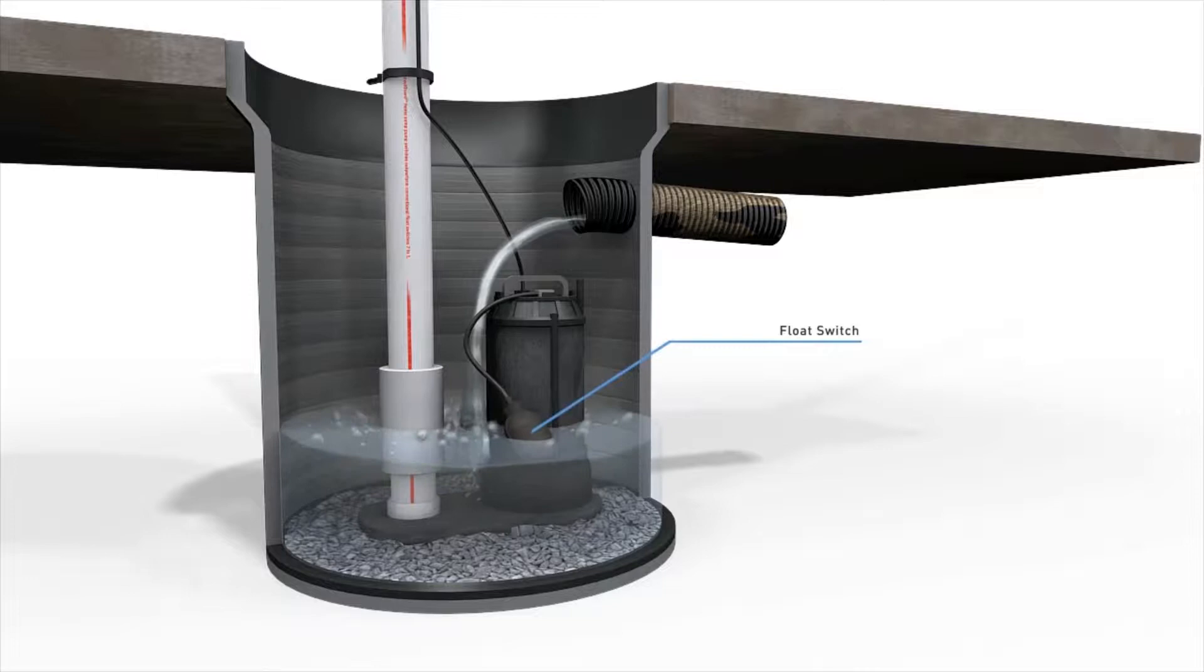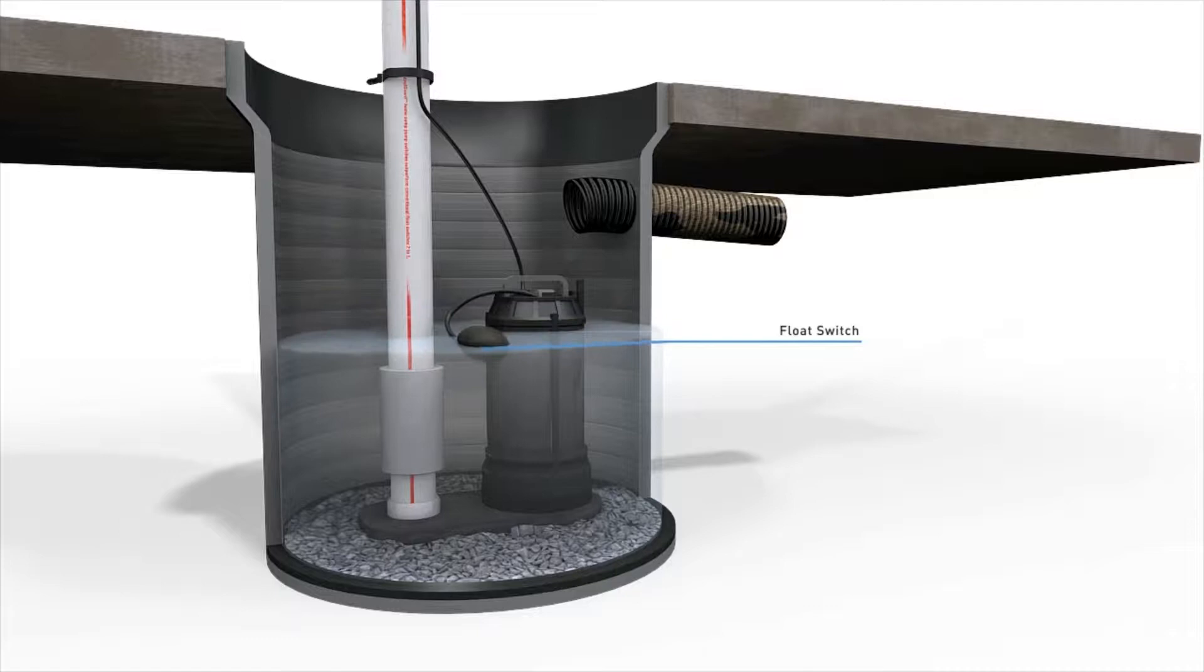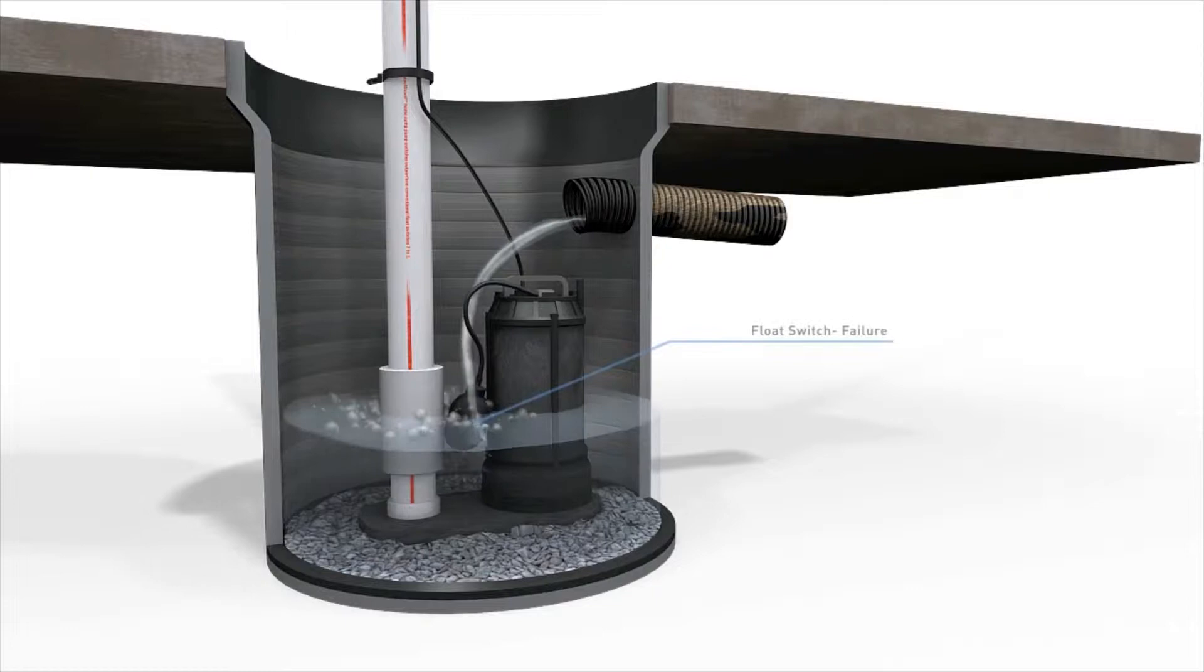Mechanical float switches activate the sump pump when they change position, typically by water filling the sump or sewage pit. They are prone to problems because they can become fouled and can fail to actuate your pump when you need it most.